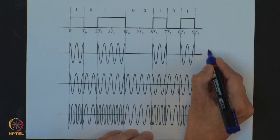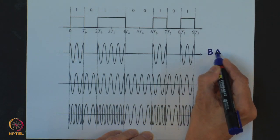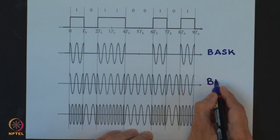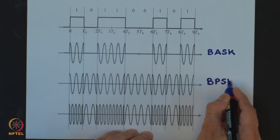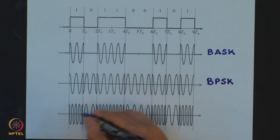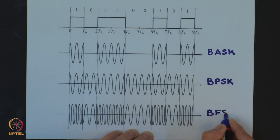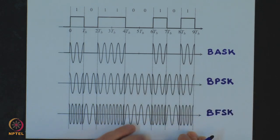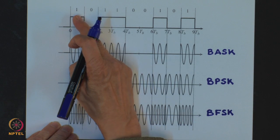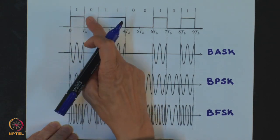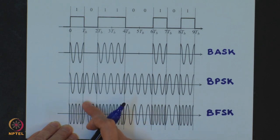This is BASK and this is BPSK, which we have studied earlier, and this figure here corresponds to binary frequency shift key. We see that for symbol 1 we have one frequency, and for symbol 0 we have another frequency.